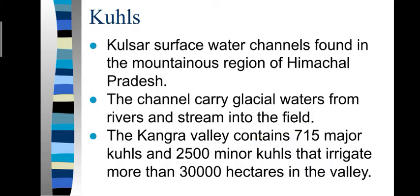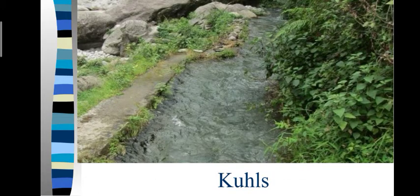Kuls are surface water channels found in the mountainous region of Himachal Pradesh. The channels carry glacial waters from rivers and streams into the fields. The Kangra Valley contains 715 major Kuls and 2,500 minor Kuls that irrigate more than 3,000 hectares in the valley.